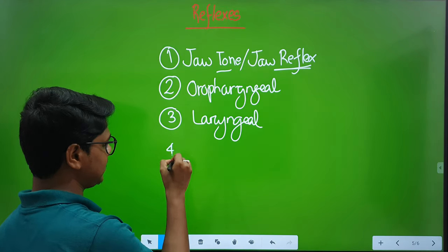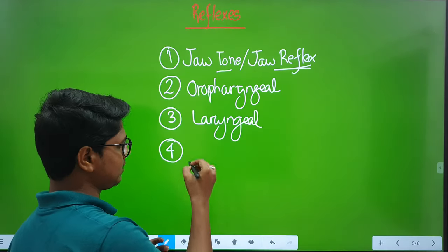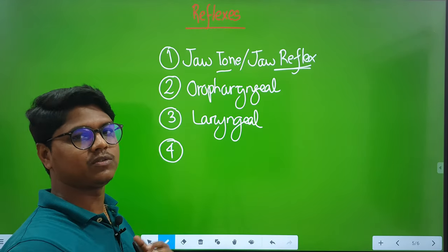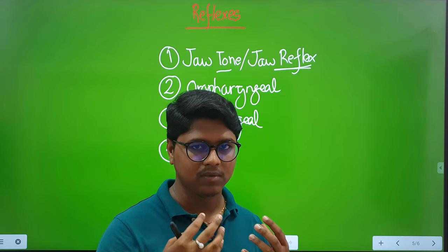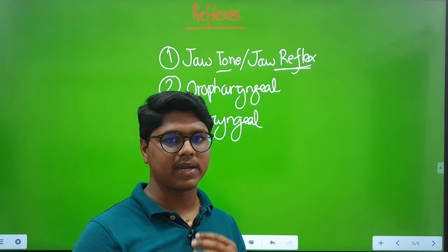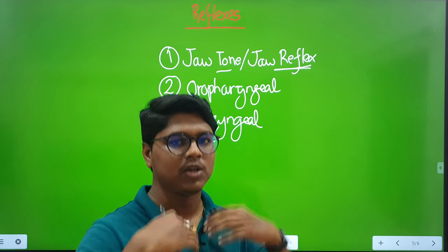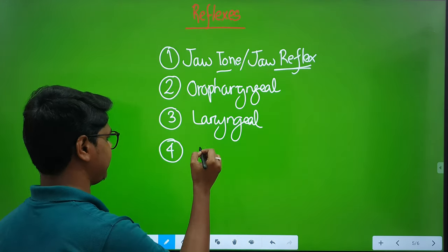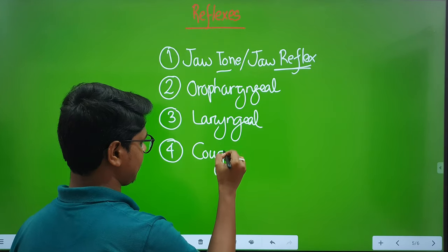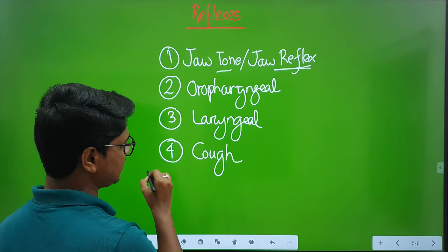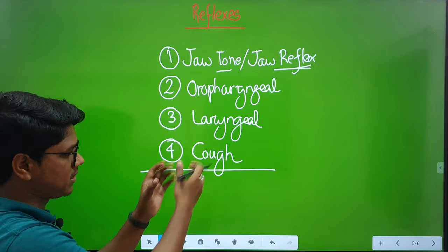Next comes the trachea. When you introduce something into the trachea, usually you will cough. Sometimes you will find something entering into the trachea and you cough it out — this is known as the cough reflex. These are a group you can remember together.